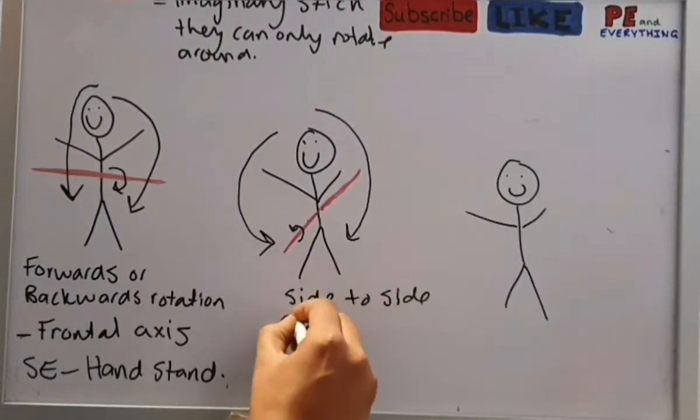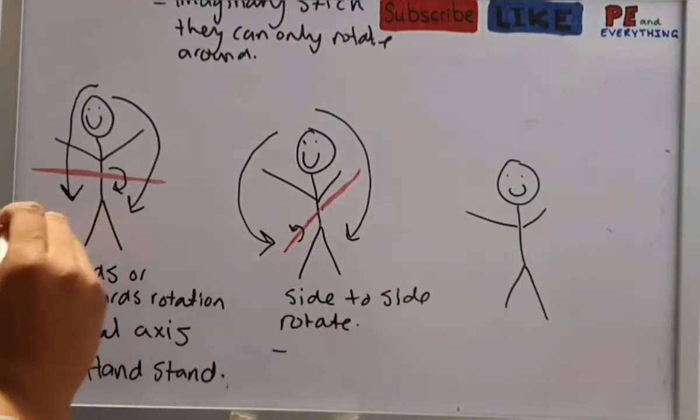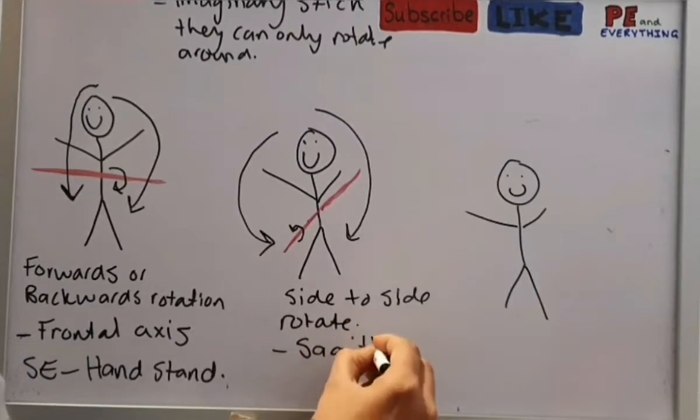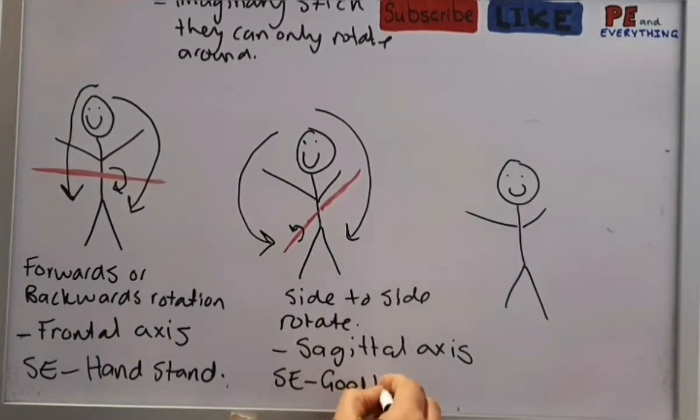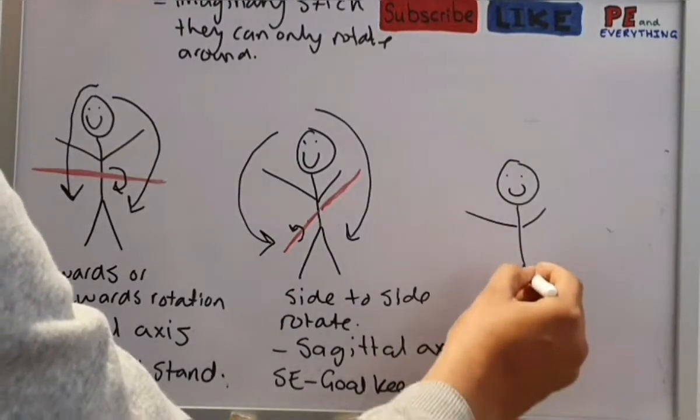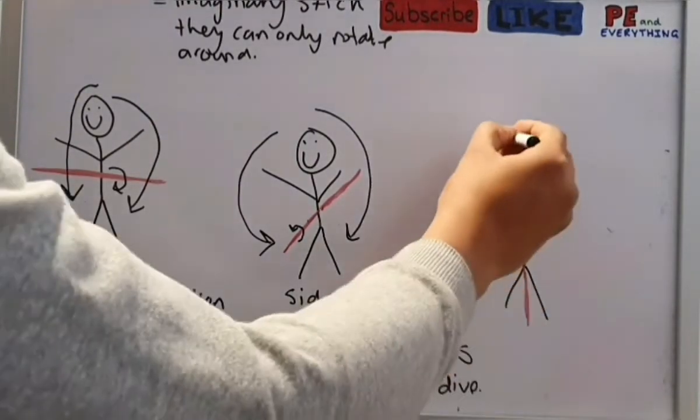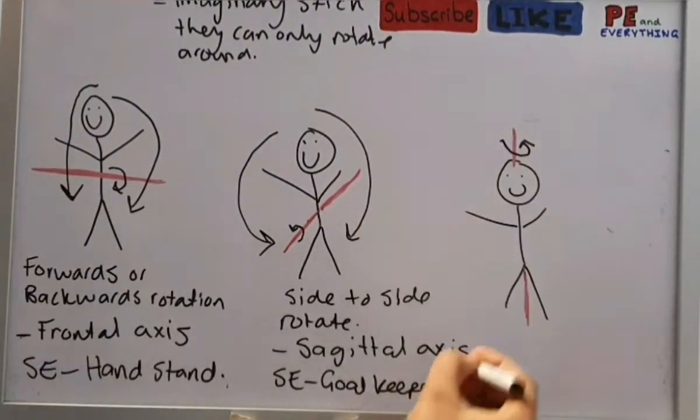The next one: I'm putting the stick directly through the belly button and it's going to come out the other side. This would enable the person to move on a side to side axis. This is called the sagittal axis. A goalkeeper would be a perfect example, because when they dive, they have to move sidewards and rotate the body sideways.